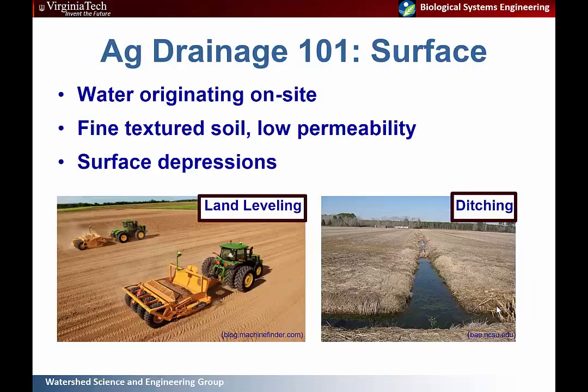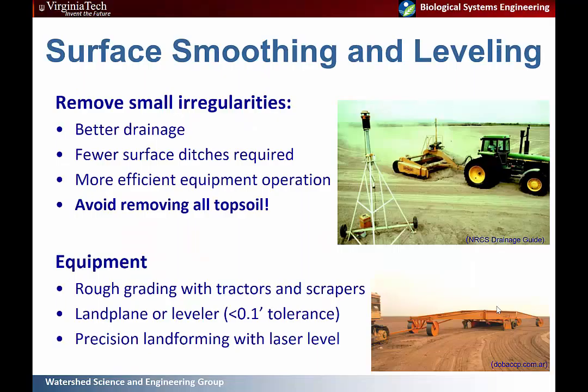For surface drainage — addressing water originating on site in surface depressions — fine-textured low-permeability soils can be a problem. Surface depressions can be eradicated with land leveling and ditching systems. Surface smoothing and leveling provides better drainage, and when used in conjunction with a ditch system can actually reduce the number of surface ditches required. It allows for more equipment operation — if you can achieve drainage by just smoothing the surface, you don't have any ditches to navigate in the field.